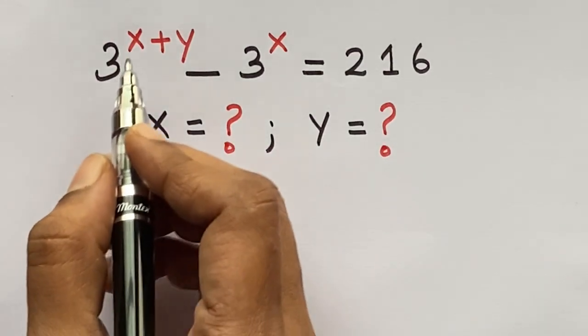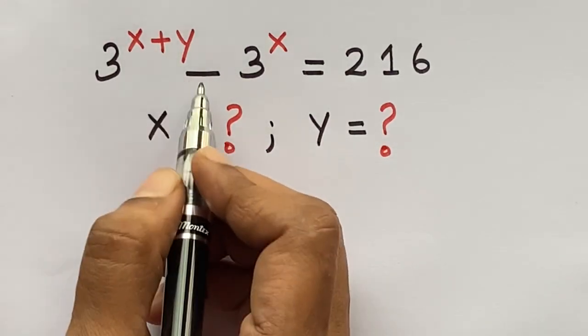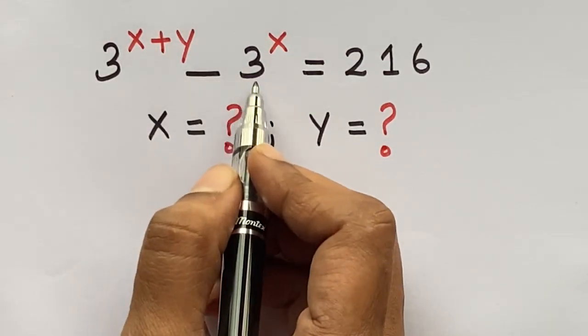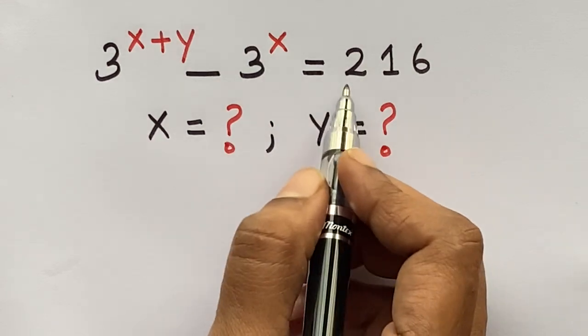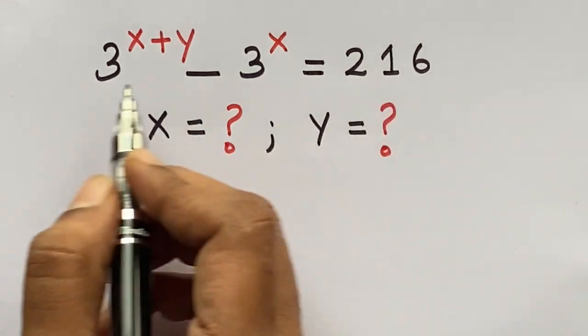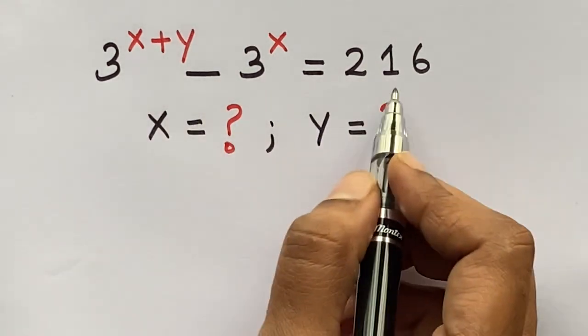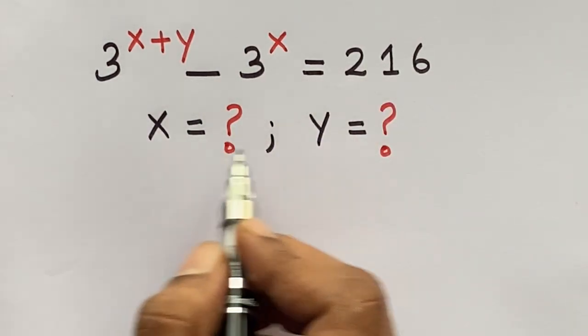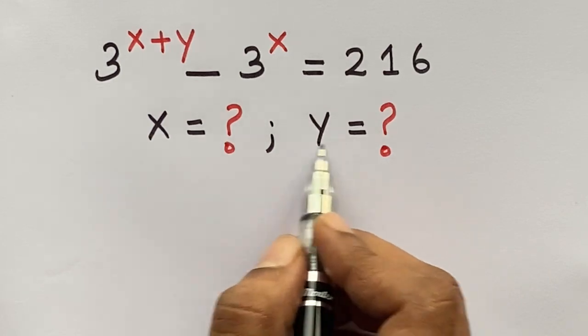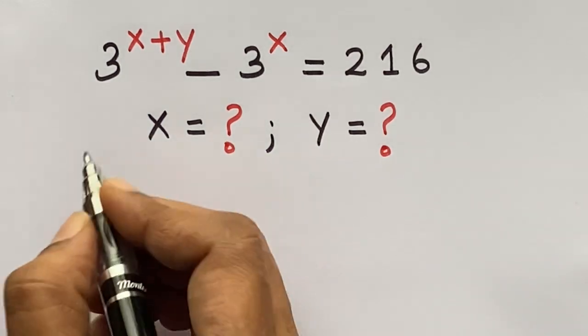Hello. 3 raised to the power x plus y minus 3 raised to the power x equals 216. Let's solve this nice math problem to find the value of x and y here. Let's start.